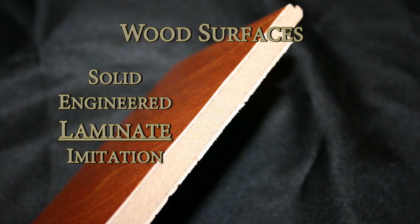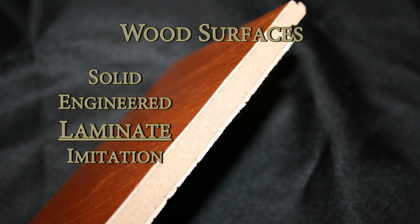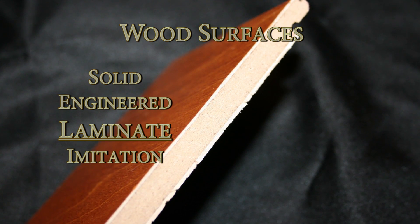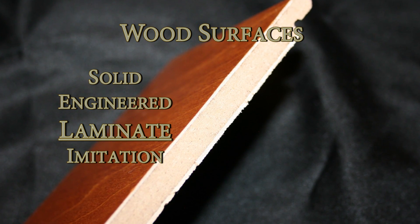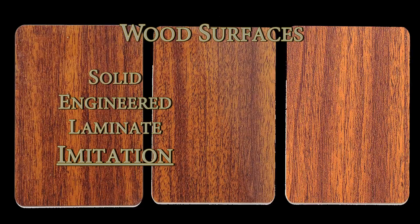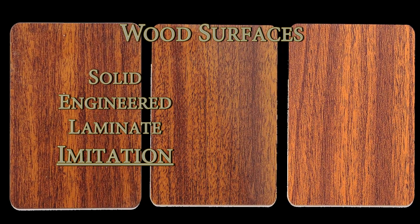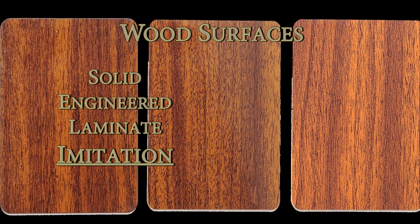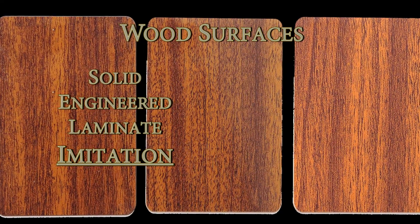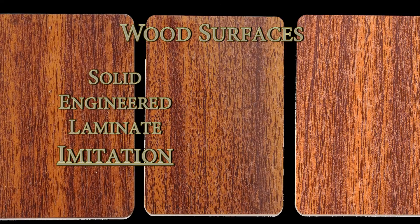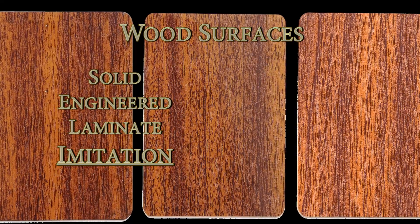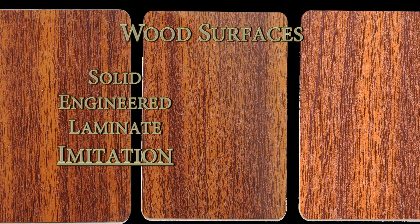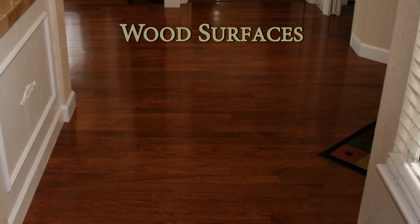Laminate is a synthetic material that looks like wood, glued to the top of a fiberboard type of material. Imitation wood refers to a completely man-made surface that's made to resemble the look and possibly the texture of real wood.